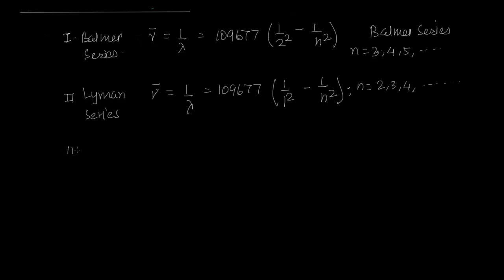Now the third was Paschen. The Paschen series was very identical: 109677, 1 upon 3 square minus 1 upon n square, with n going from 4 to 5 to 6.